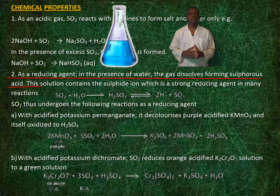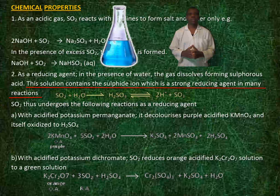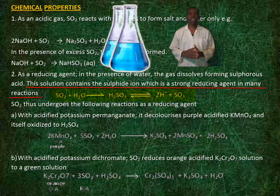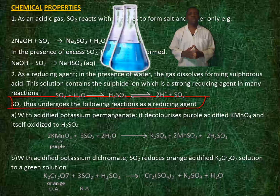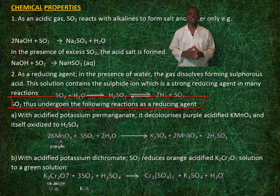As a reducing agent, in the presence of water, the gas dissolves, forming sulfurous acid. This solution contains a sulfite ion, which is a strong reducing agent in many reactions. Sulfur dioxide therefore undergoes the following reactions as a reducing agent.